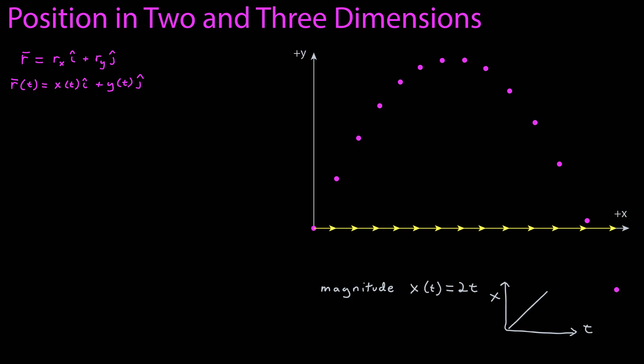A graphical representation of that, x versus time, would be a straight line. Now if I want to describe that yellow vector as a function of time, it would look like this. The magnitude is 2t, and the direction is along the x-axis for every yellow arrow. Now let's do the same for the y-axis.